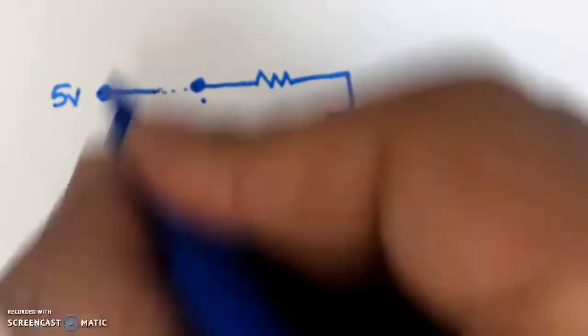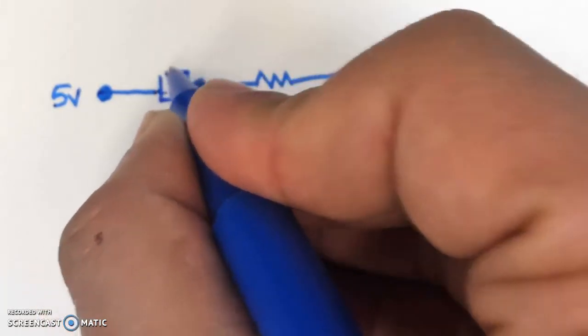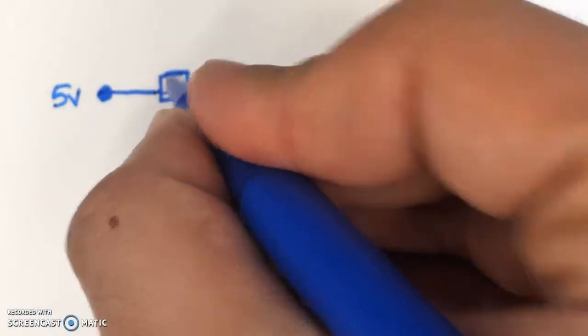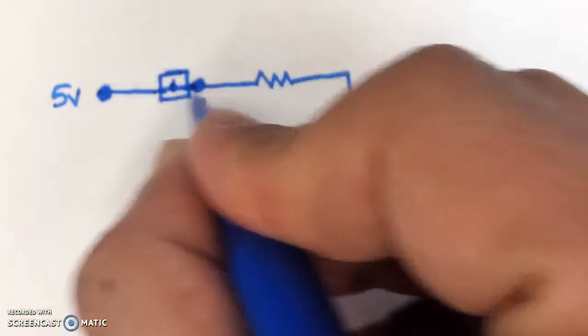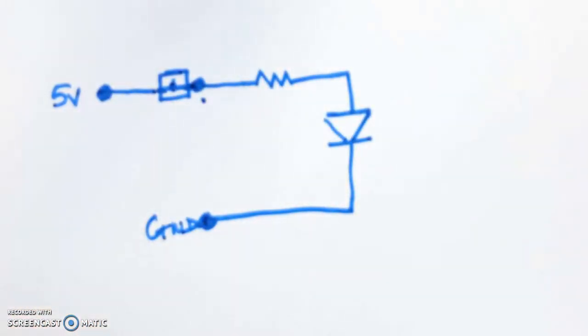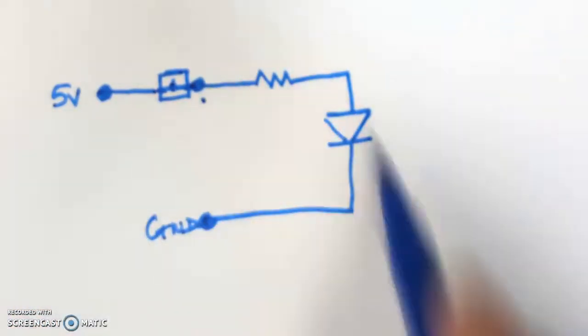I'll draw the switch right here. What happens when I press the switch, the switch will make a connection so 5 volts will flow through that LED and go to ground and make a complete loop.